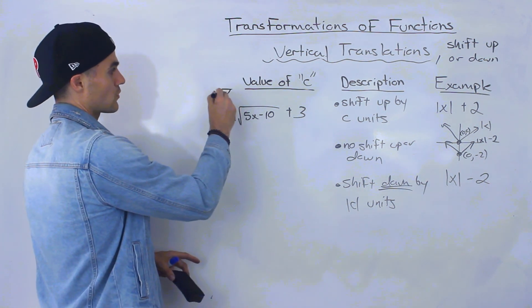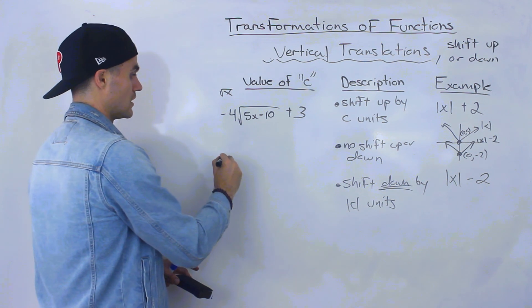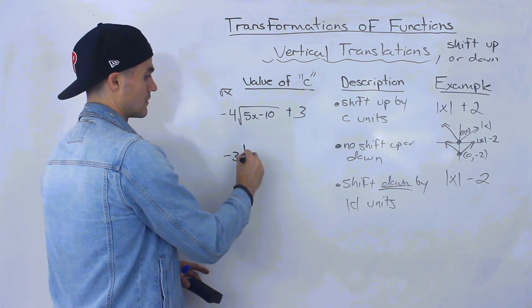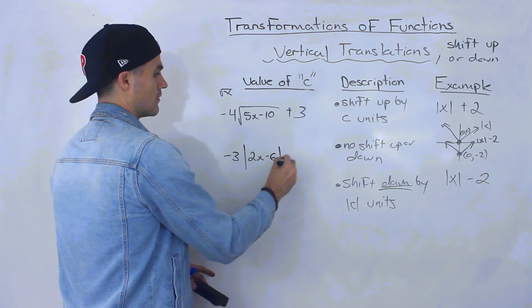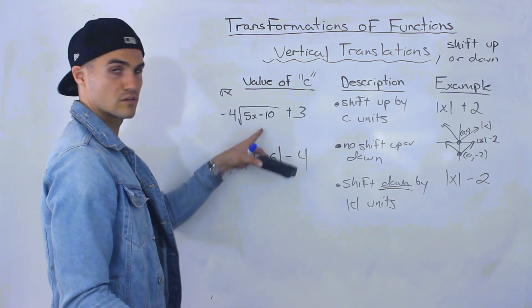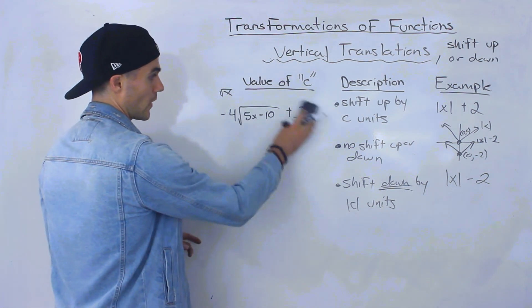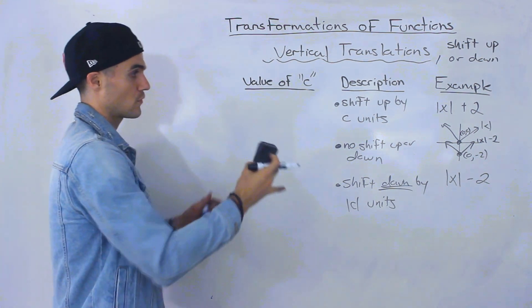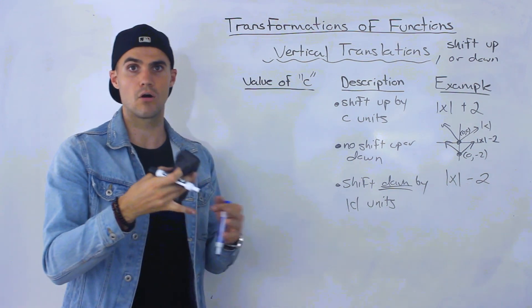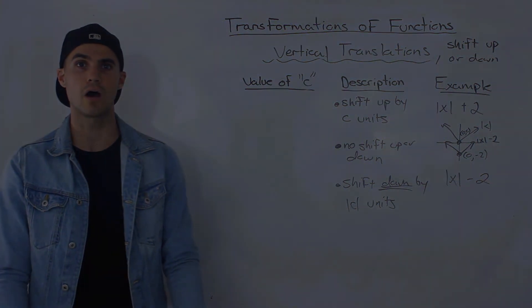Right, and notice how the parent function is the square root of X in this case, but we could apply these same transformations to anything. So what about something like that? How do we graph stuff like this in a fairly smooth and quick way? How do we graph when we are combining all these different transformations that we went over? And that's what we're going to cover in the next couple of videos.